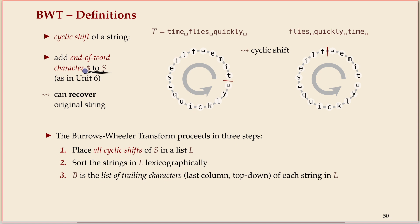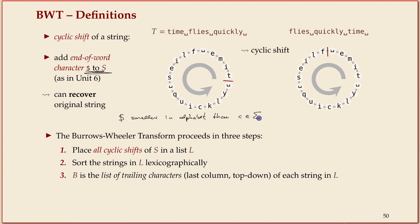The dollar symbol is just the convention — it's supposed to be a character that comes before everything lexicographically. We assume it's smaller in the alphabet than all other characters, which happens to be the case if you use ASCII with only standard letters. Theoretically it's just any letter; you can pick whatever you want. That's just the convention to show it as a dollar.